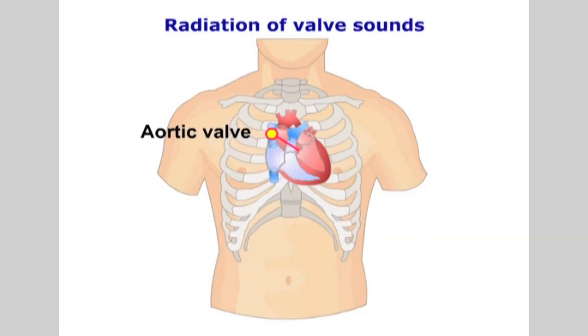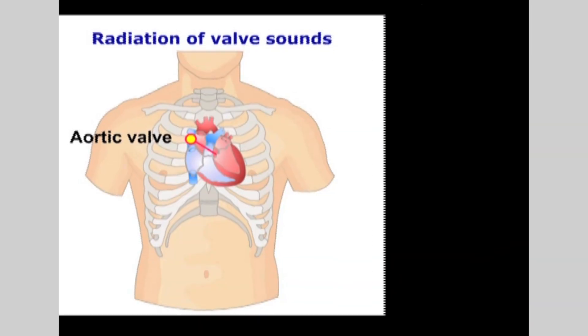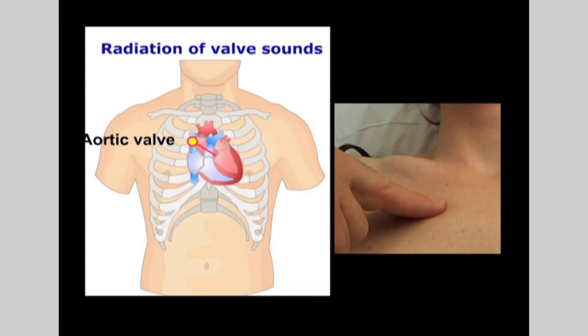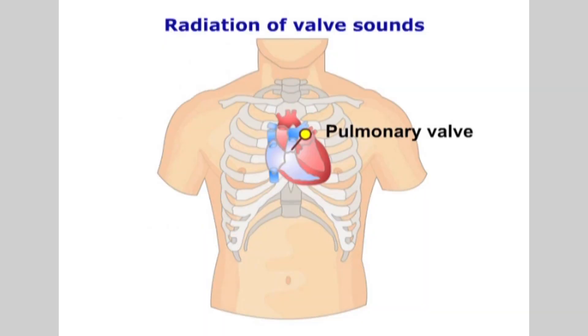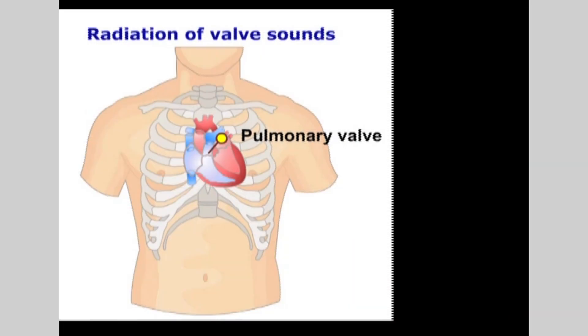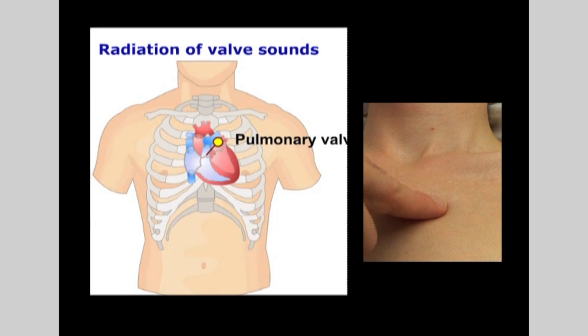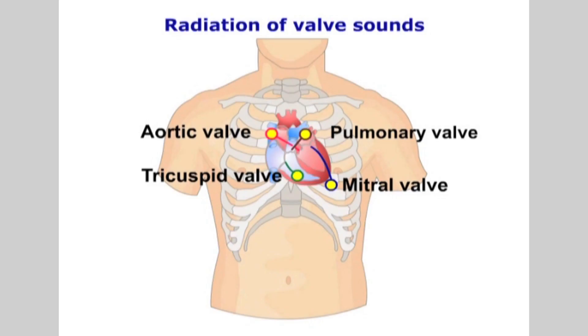The aortic valve is auscultated over the right sternal border at the level of the second intercostal space, and the pulmonary valve over the left sternal border, also at the level of the second intercostal space. Begin the auscultation procedure by listening to the heart valves.